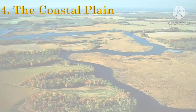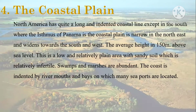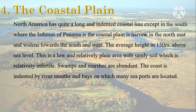Now let's study about the coastal plains. North America has quite a long and indented coastline except in the south where the Isthmus of Panama is. The coastal plain is narrow in the northeast and gets wider towards the south and west. The average height is 150 meters above sea level. This is a low and relatively plain area with sandy soils which is relatively infertile, and swamps and marshes are abundant.